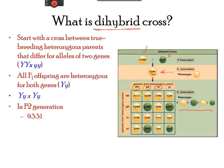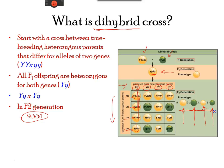The four gamete combinations are: capital Y capital R, capital Y small r, small y capital R, and small y small r. These are placed on the top and sides of the Punnett square. In the F2 generation, combinations are made by taking the gamete on the top and on the side and placing them in one box. Working through this cross gives 16 combinations, with a ratio of 9:3:3:1 — 9 round and yellow, 3 round and green, 3 wrinkled and yellow, and 1 wrinkled and green.